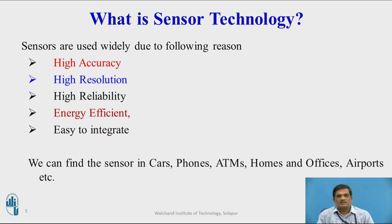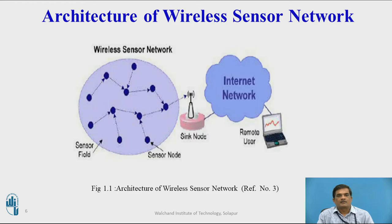We can find sensors in different applications like automated cars, smartphones, ATMs, homes, offices, airports, etc. Sensor technology is also being used in designing wireless sensor networks. We will look first at the architecture of a wireless sensor network and then discuss how sensor technology is used in designing spatial sensors.